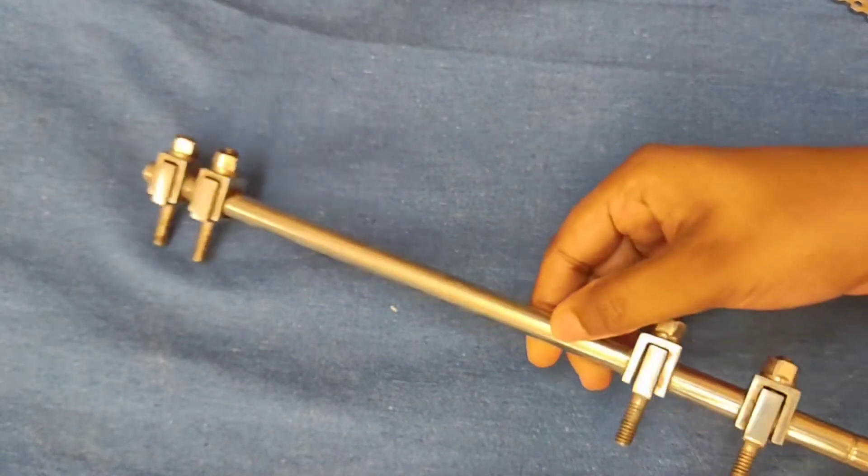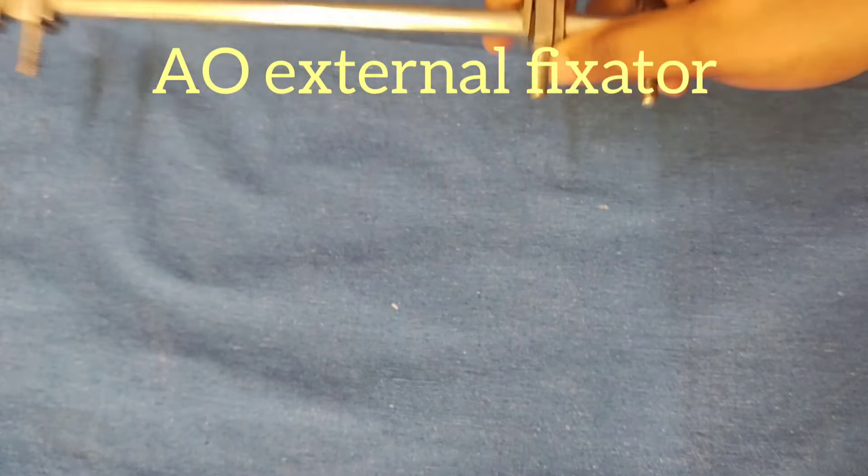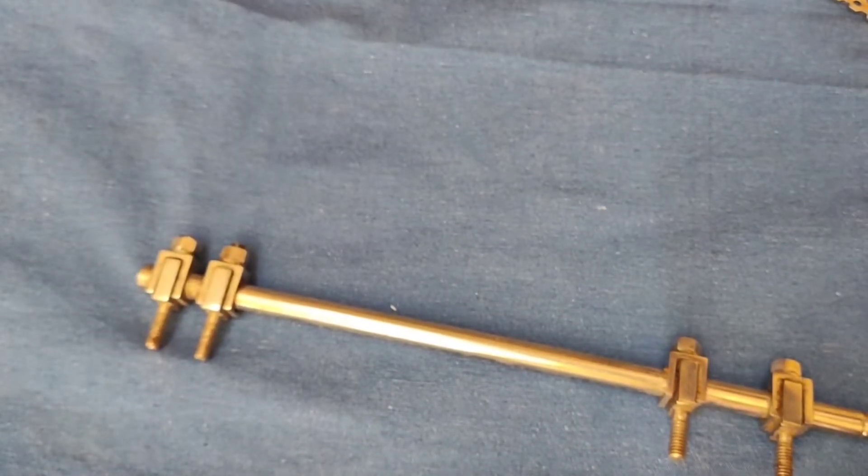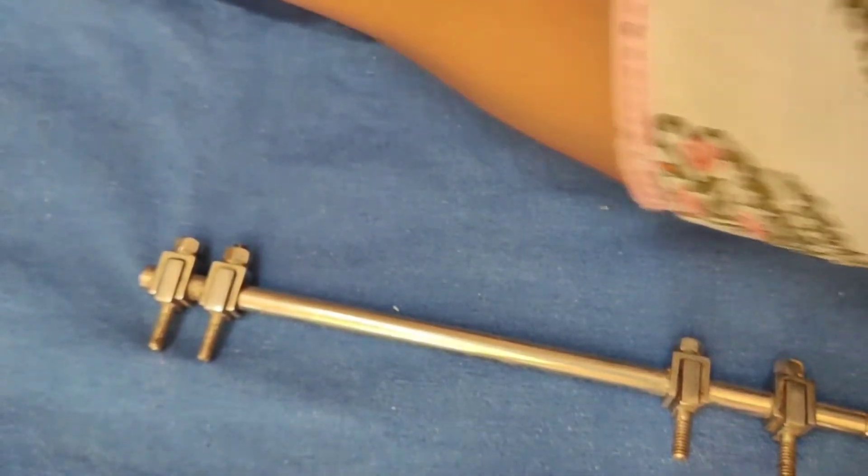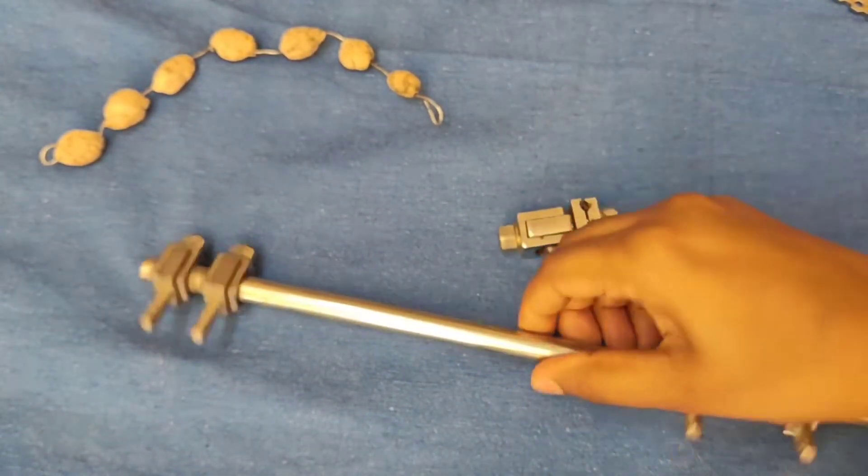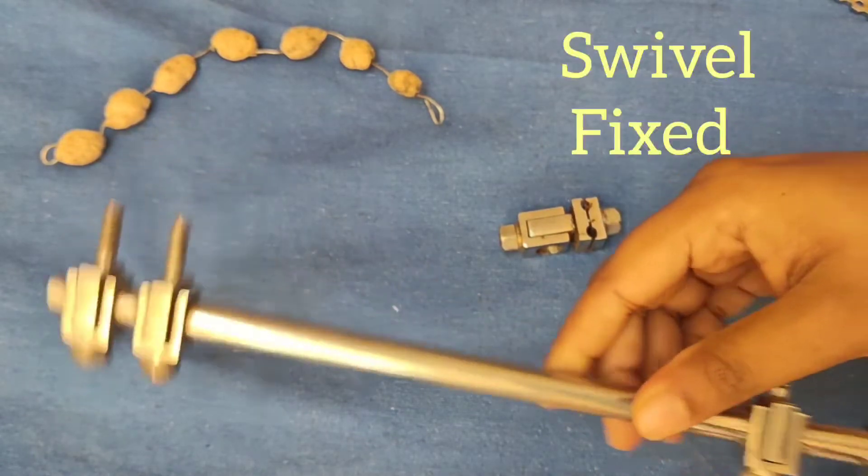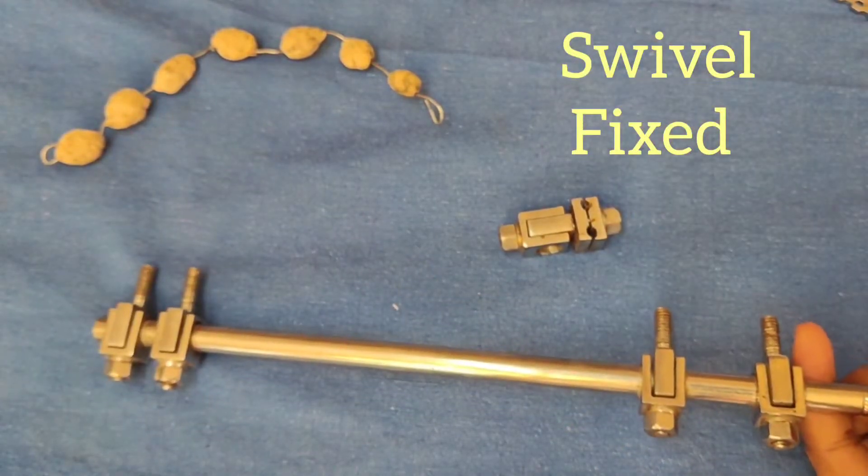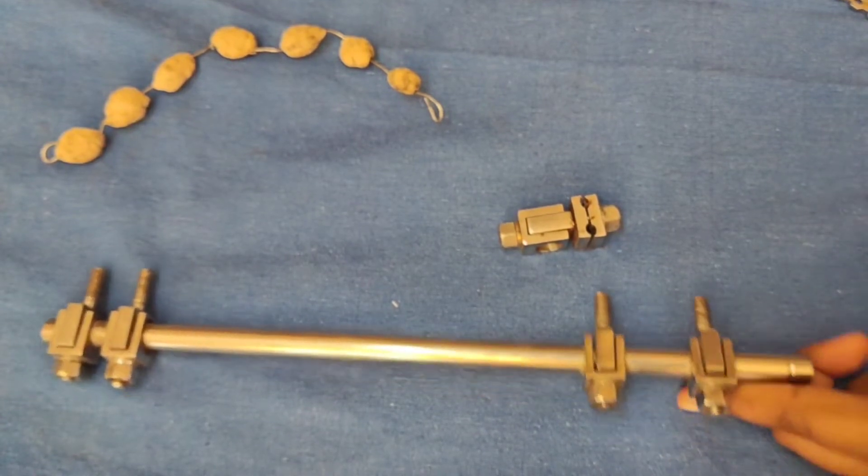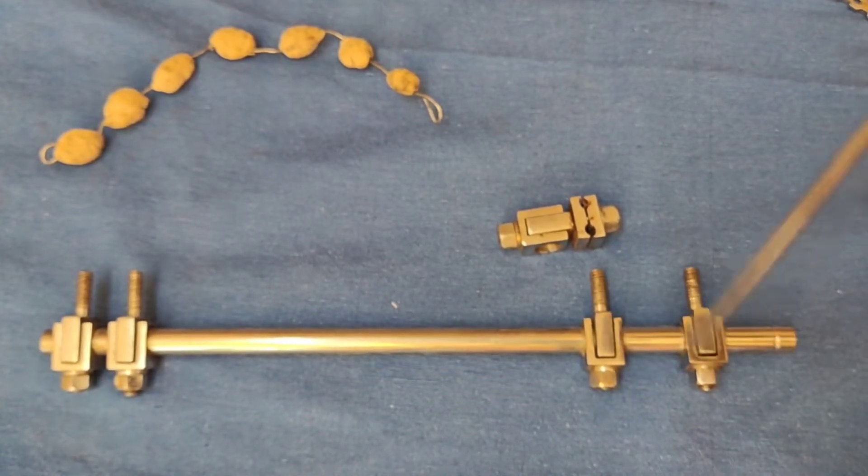Next, we will discuss about the clamp and rods of AO external fixator frame. The connecting rod has got a diameter of 11 mm and a length of 10 to 60 cm. And it has got clamps. These clamps are two types: swivel or closed type and fixed or open type. Here you can see the closed type of clamp.